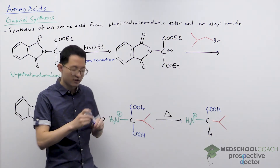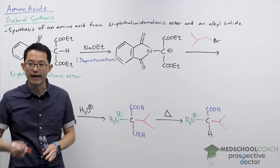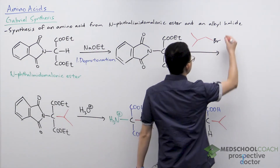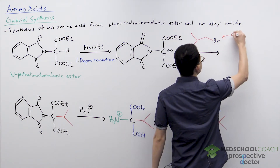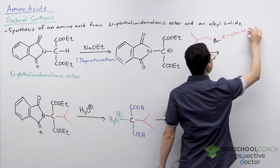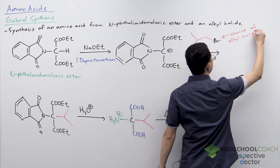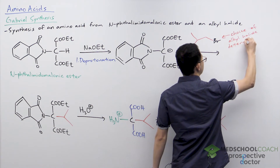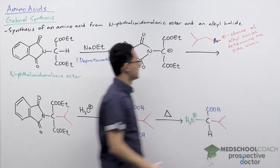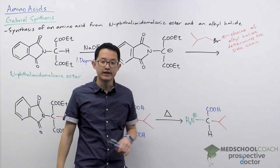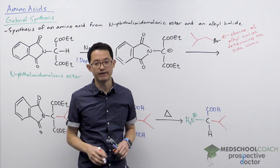This carbon with a full negative charge can act as a nucleophile, and in this step you introduce your alkyl halide. The choice of the alkyl halide determines the side chain of the amino acid you make. If you look at this alkyl halide, you should note that this is the side chain of valine — so here we're trying to make the amino acid valine.